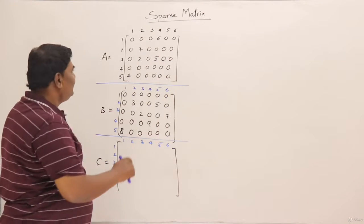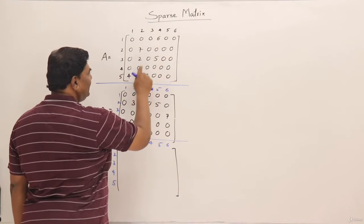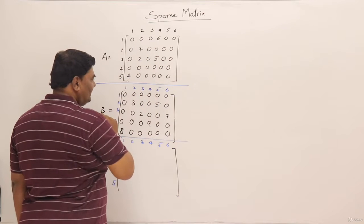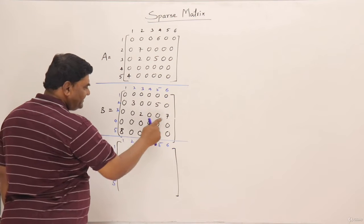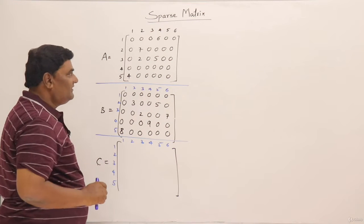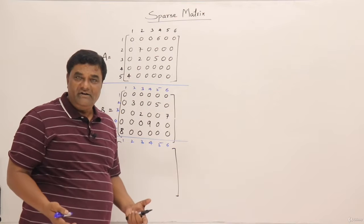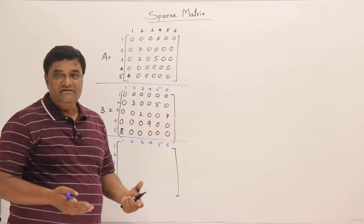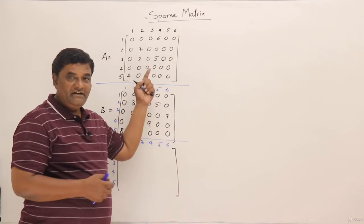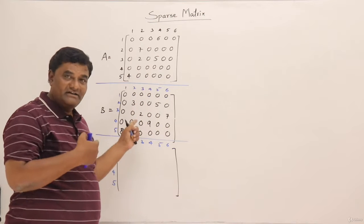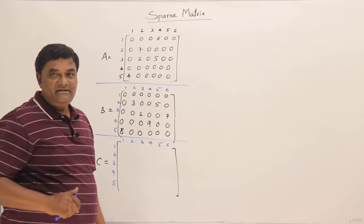The nonzero elements in the first matrix are 6, 7, 2, 5, and 4. The nonzero elements in the second matrix are 3, 5, 2, 7, 9, and 8. A normal procedure for adding two matrices is to run through every element of A and add it with the corresponding element of B. So let us add them.